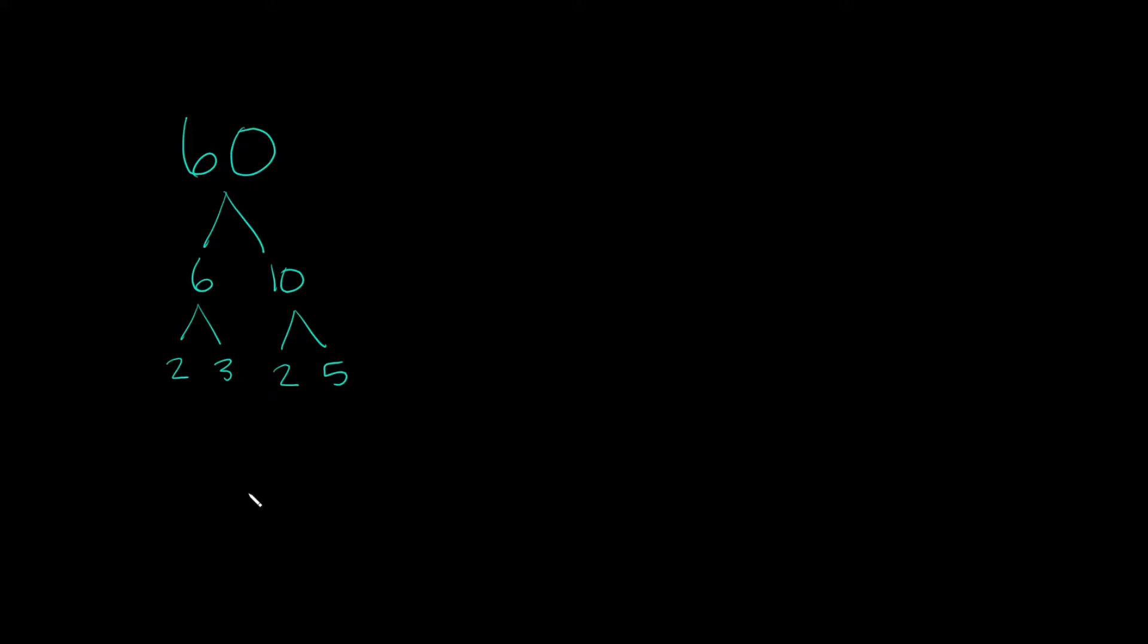Now do I have any prime numbers? Yes I do. 2 is prime, 3 is prime, 2 again is prime and 5 is prime. Now what do you do when you find all your prime factors? We're just going to multiply them all together. So we're going to have 2 times 3 times 2 times 5. And this is going to equal our original number, 60.